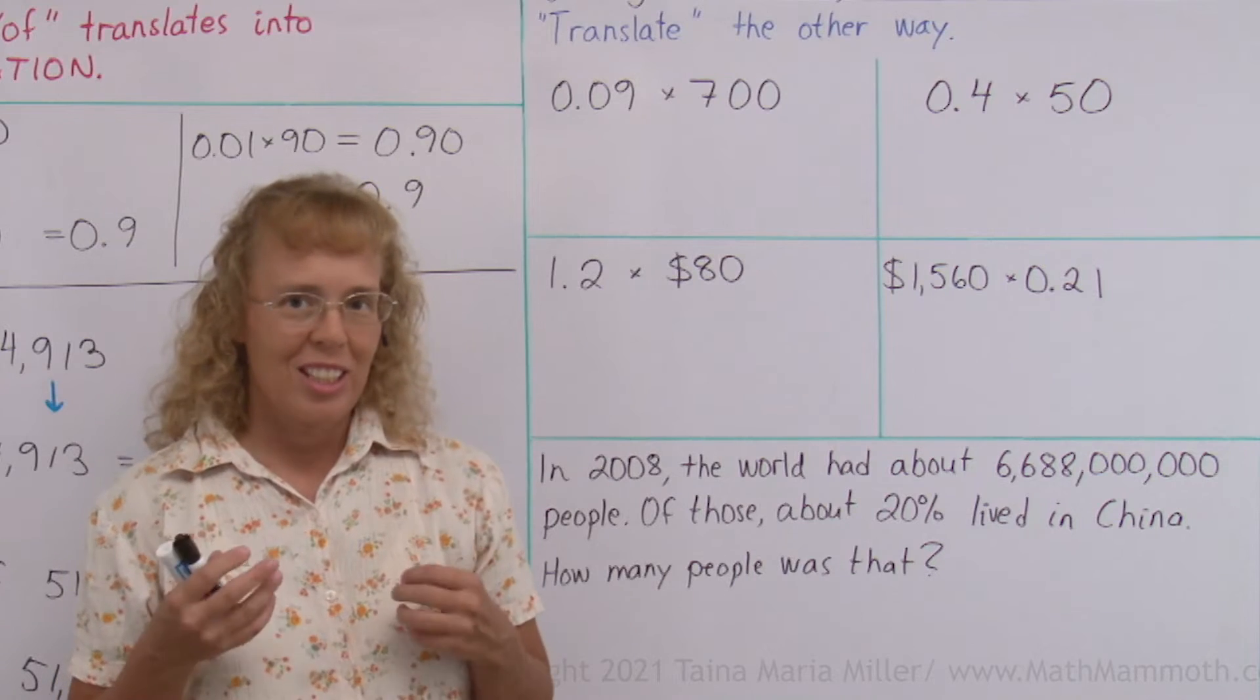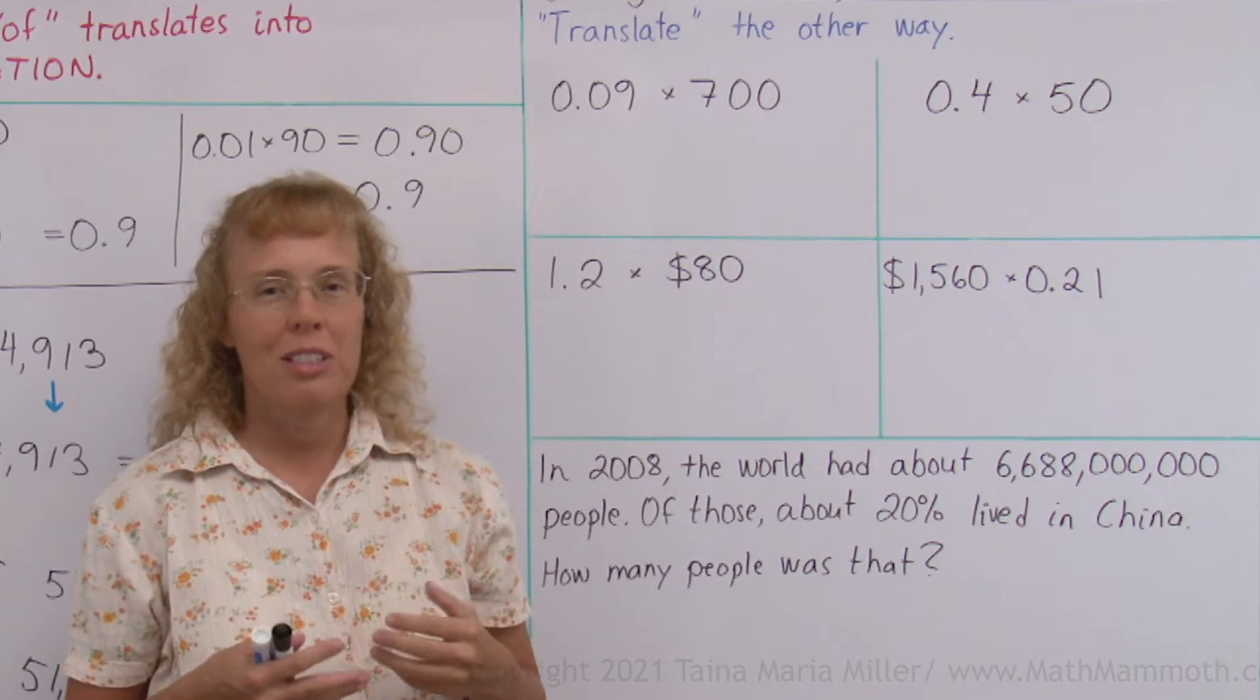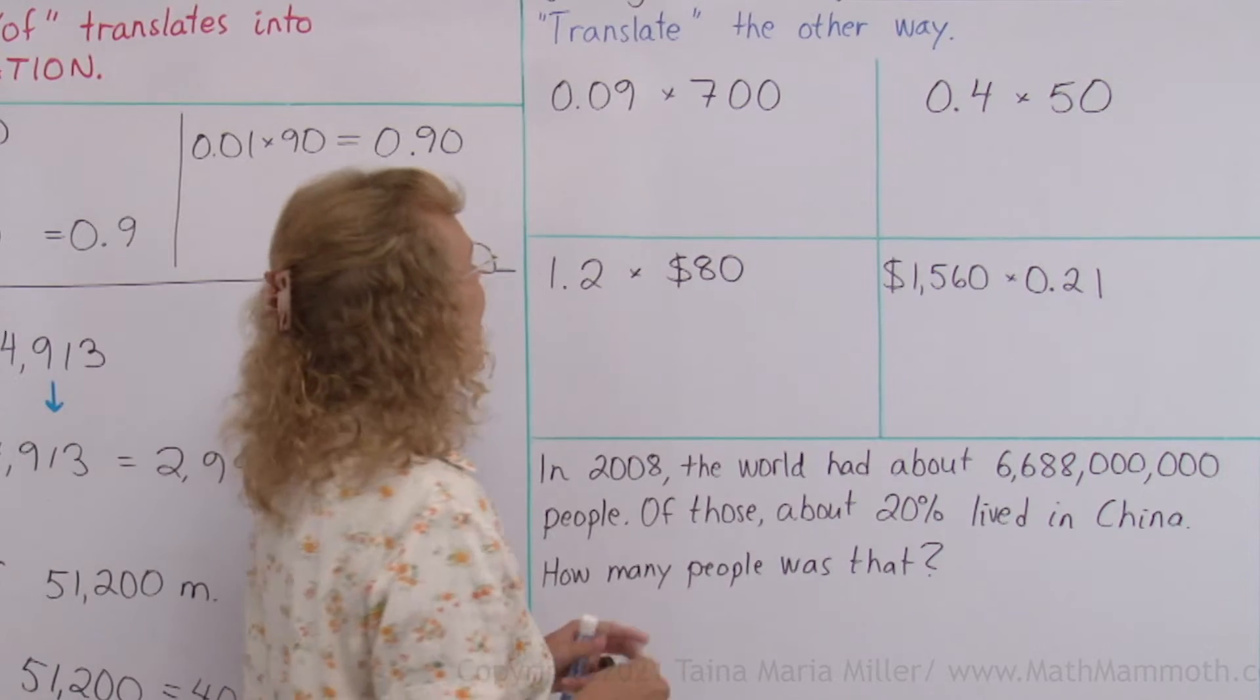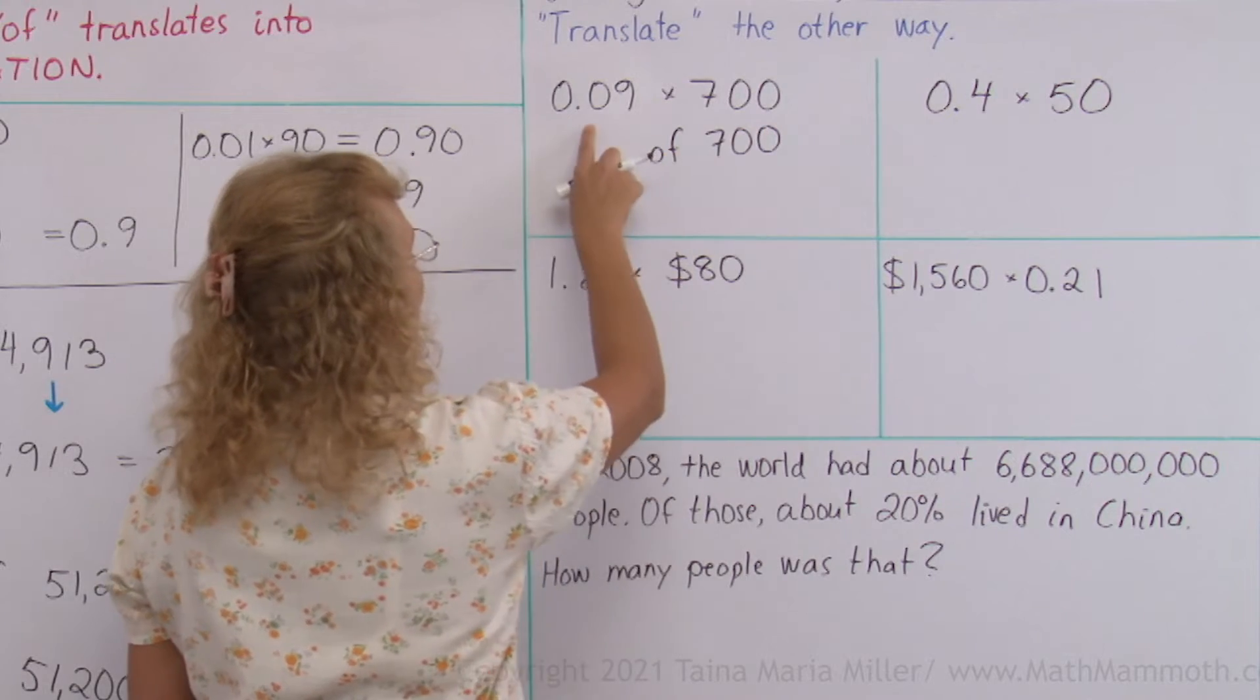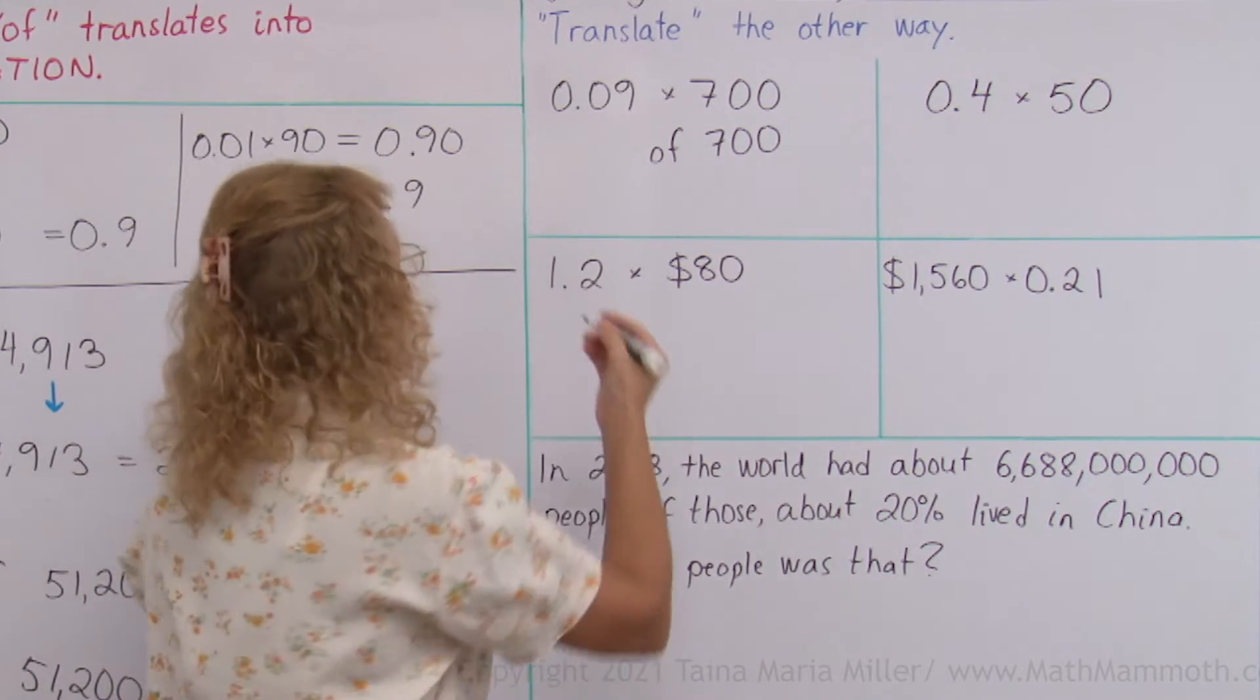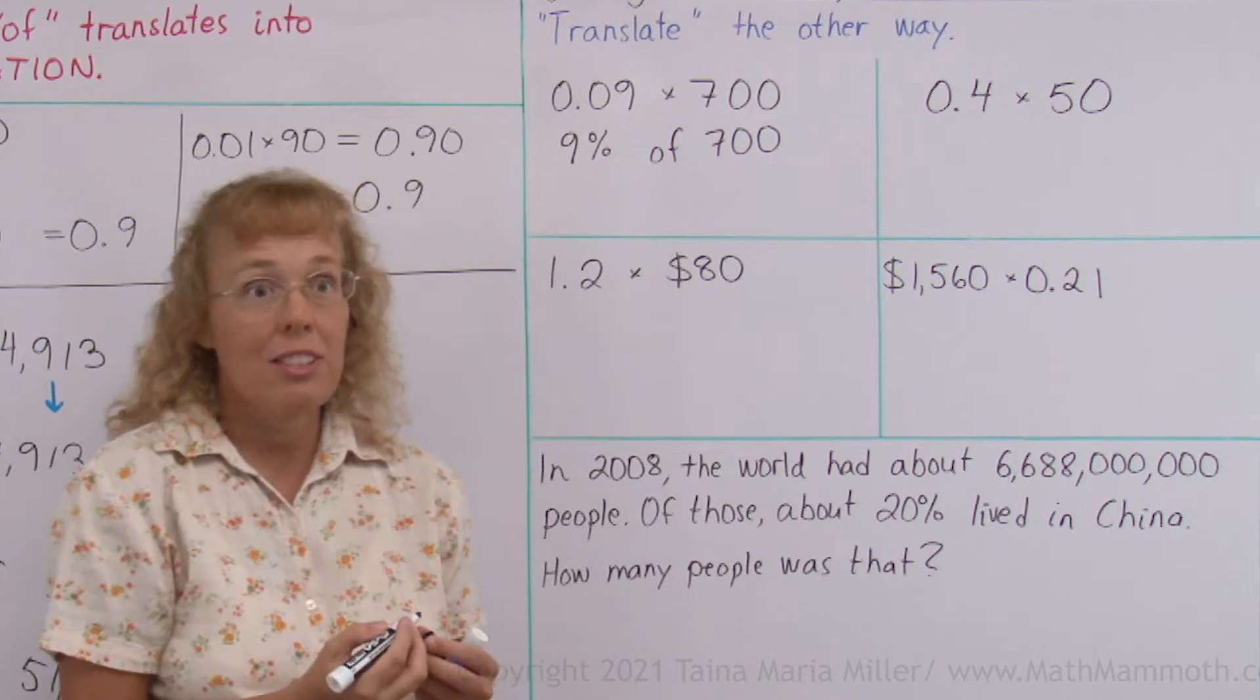Over here we're going to do those translations the other way. In other words, I have here some decimal multiplications and we're going to write them as percent of something. This would be the 'of'. And 700 does not change. The decimal 0.09 or nine hundredths is of course 9%. So this is the same as 9% of 700.